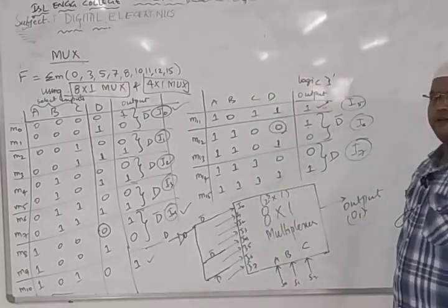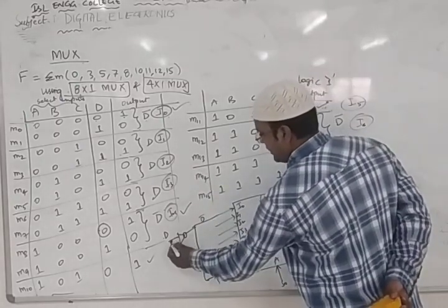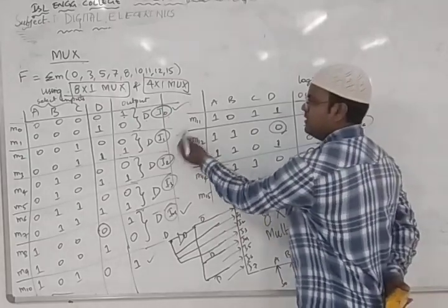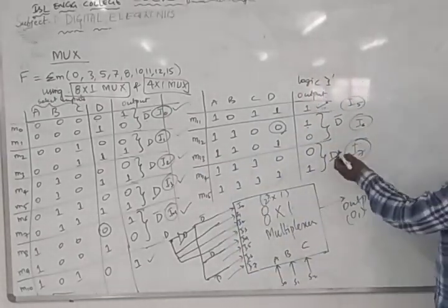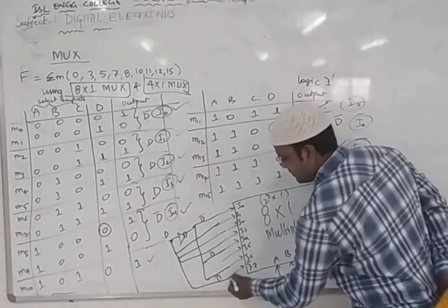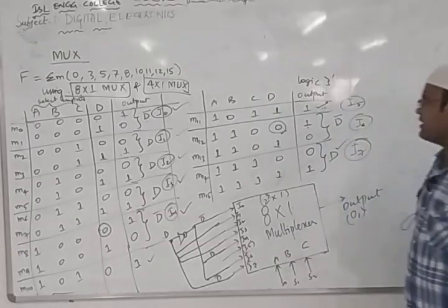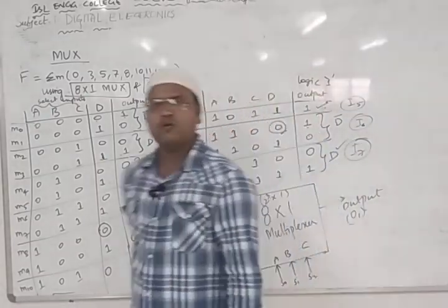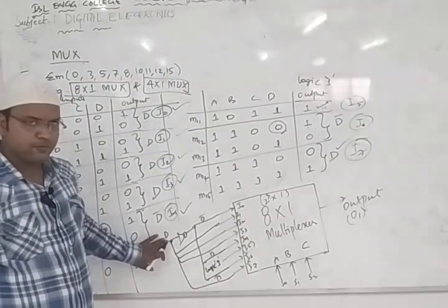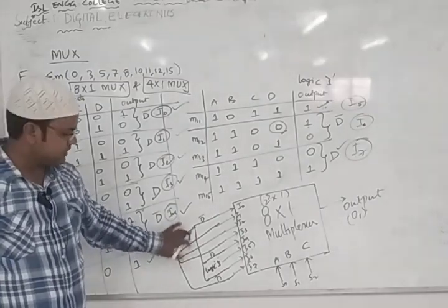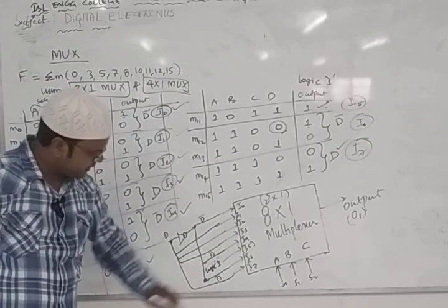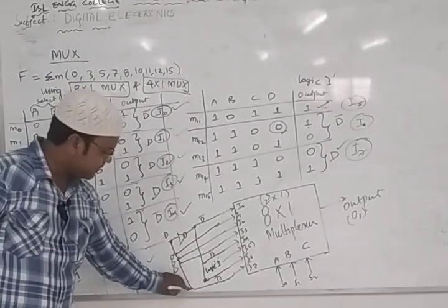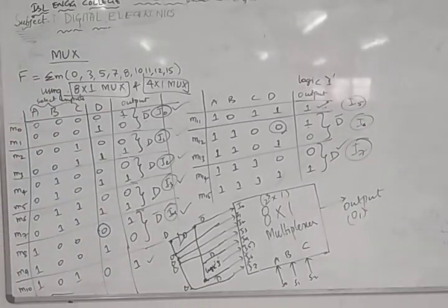Inputs I1, I2, I3 are connected to D directly. I7 is also D, so the same D connection passes to I7. Input I5 is logic 1, so we give a constant high directly to I5. This completes the 8-to-1 MUX design for the given boolean function.